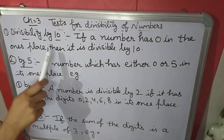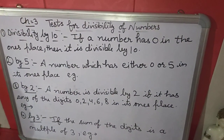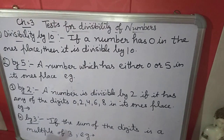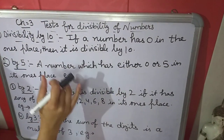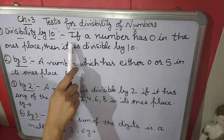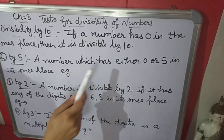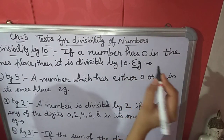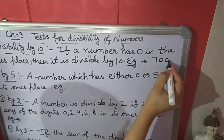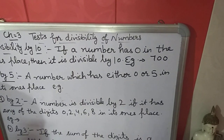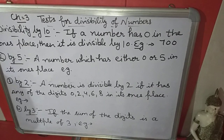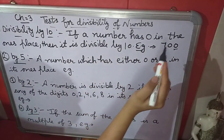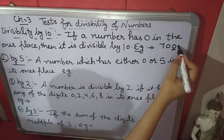First is divisibility by 10. How we can find if a number is divisible by 10 or not. We will use this rule — we will not divide only. The rule is that if a number has 0 in the 1's place, then it is divisible by 10. This is simple.